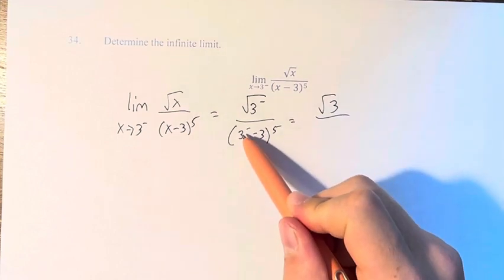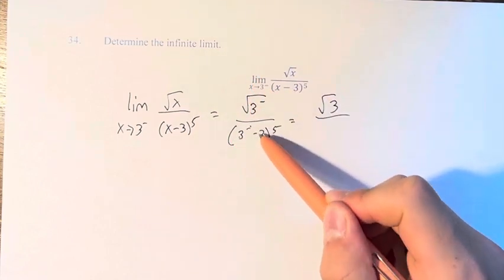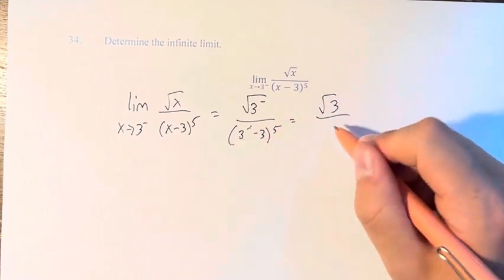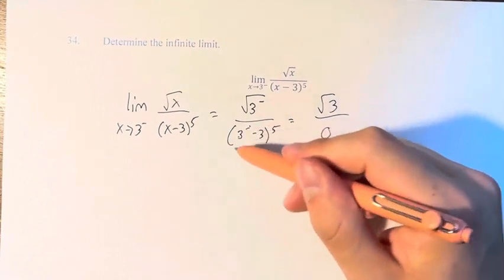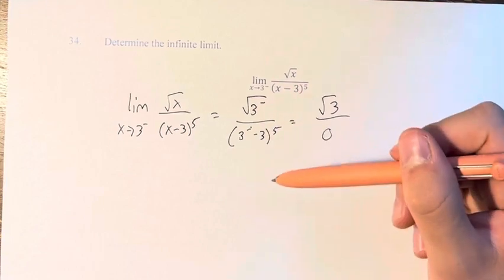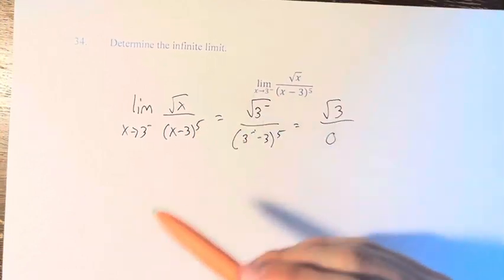As opposed to, we are approaching 3 from the left minus 3, this is approaching 0, so this actually matters, because when we're approaching 0, whether it's positive or negative matters.